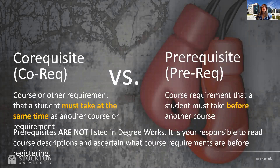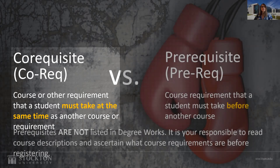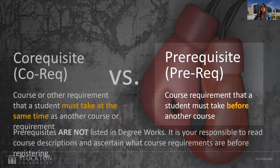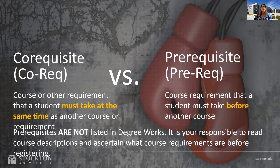What are the differences between a co-req and a pre-req? A co-req is a course or another requirement that a student must take at the same time as another course or requirement. A pre-req is a course that is required as a prior condition to registering for another course. You will receive a co-requisite error if you do not register for the other course requirement at the same time. Go back to the search results in the registration tab and select the co-requisite course that fits your schedule, then resubmit. Please note that prerequisites are not listed in your DegreeWorks. It's your responsibility to know what the prereqs are for the class you're registering for.